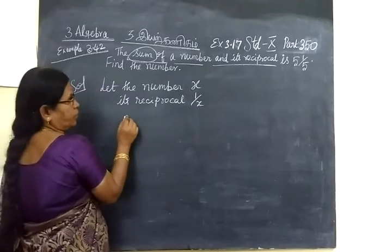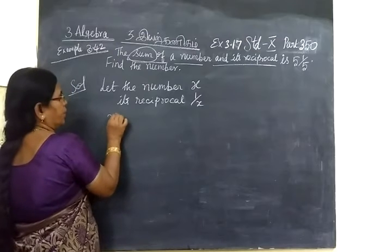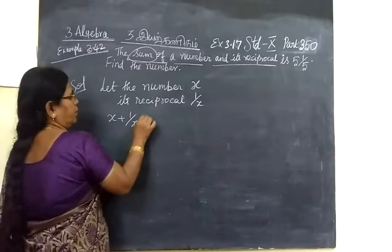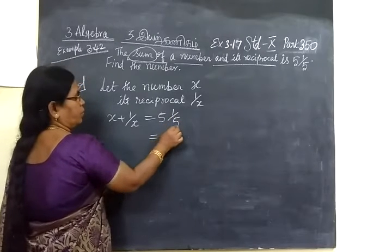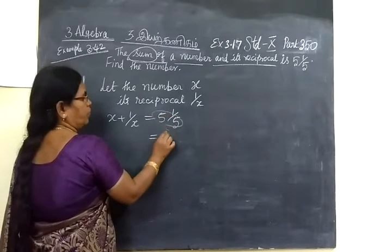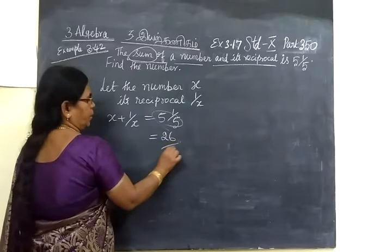So sum equal to 5 and all. So x plus 1 by x equal to 5 1/5. So 5 by 5 are 25, 25 plus 1, 26 by 5.